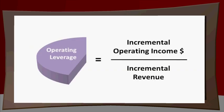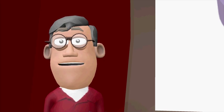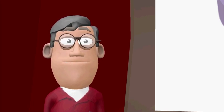Operating leverage is the ratio or percentage of incremental operating income dollars and incremental revenue. What do we mean by incremental operating income dollars and incremental revenue? Consider the following example, where we sell twice as many units in year two as in year one.